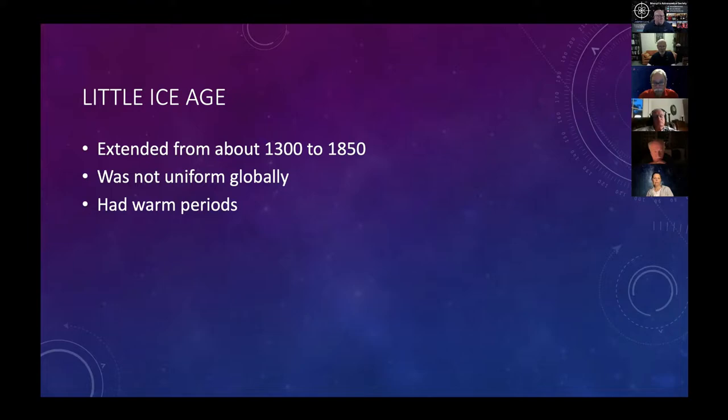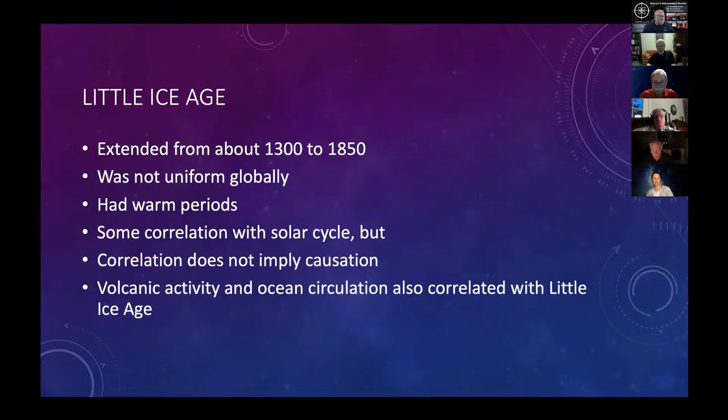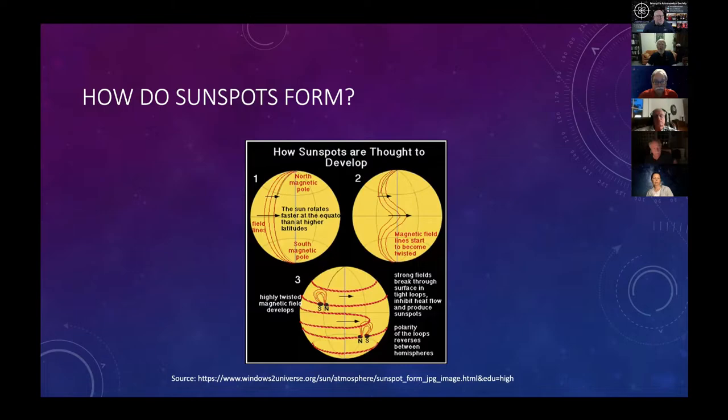When John Eddy, the solar physicist, wrote a book about the Maunder Minimum and its relation to the Little Ice Age, people jumped to the conclusion that the dearth of sunspots caused the Little Ice Age. Well, turns out the Little Ice Age extended a lot further than that. It started in the early 14th century and went on until the mid-19th century, so it was much longer than just the 70 years of the Maunder Minimum. It was not uniform around the world. It had warm periods interspersed with cold periods, and there was some correlation with the solar cycle. But what we learned in elementary statistics is correlation does not imply causation. Other factors correlated with the Little Ice Age were volcanic activity, which is known to affect climate, and ocean circulation. I think the lack of sunspots was not the main reason for the Little Ice Age.